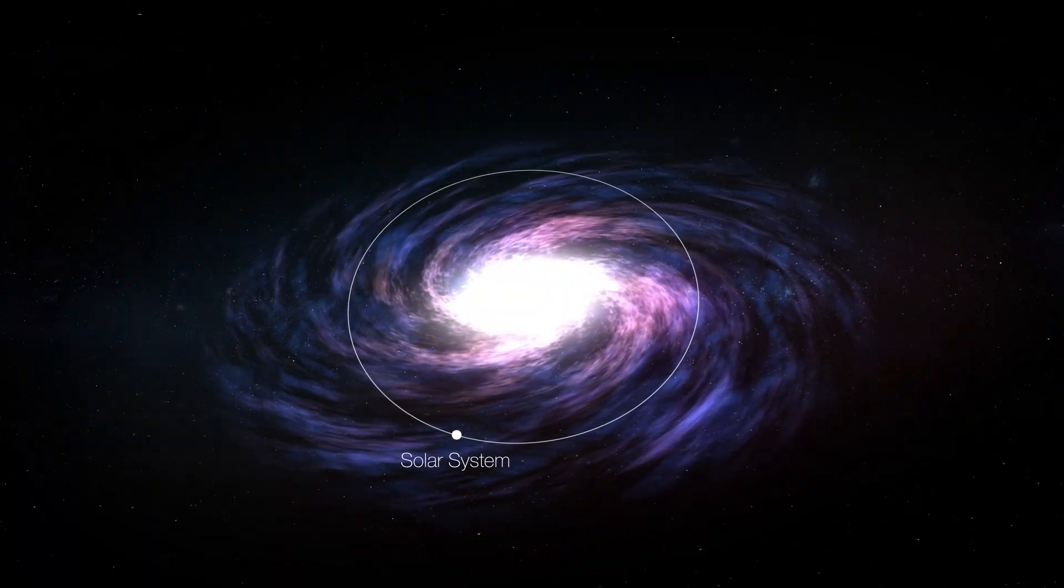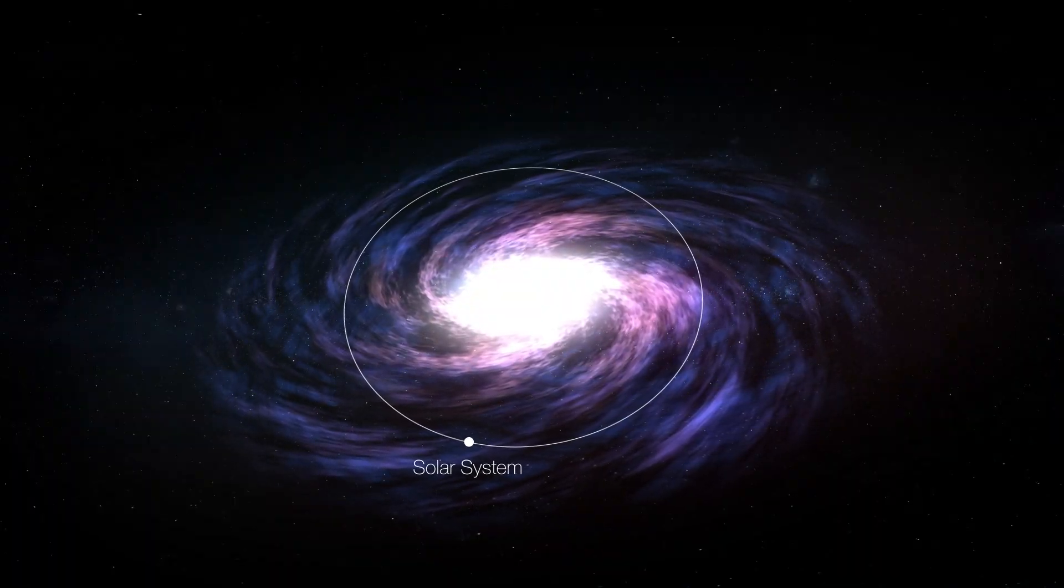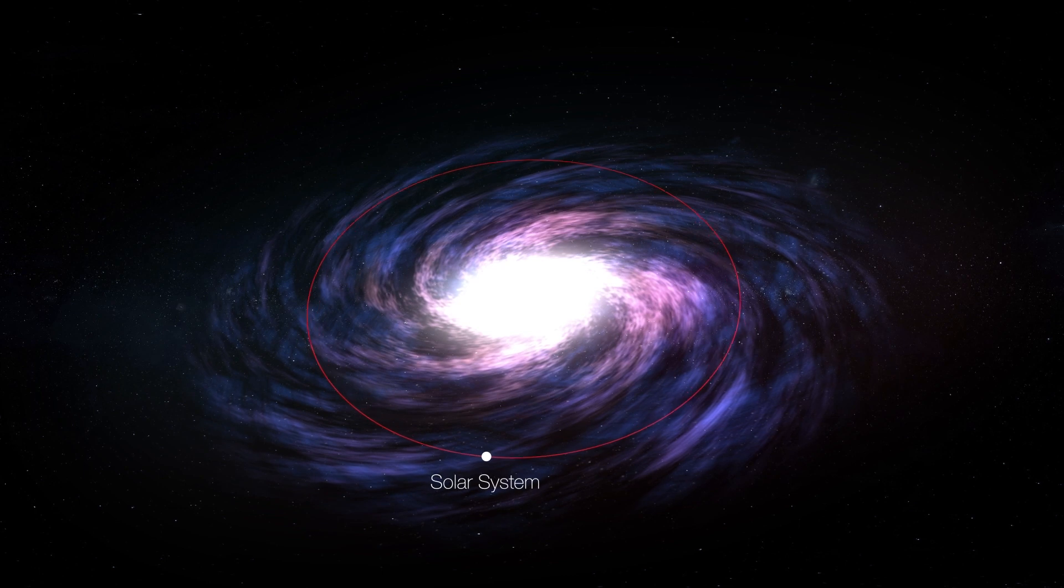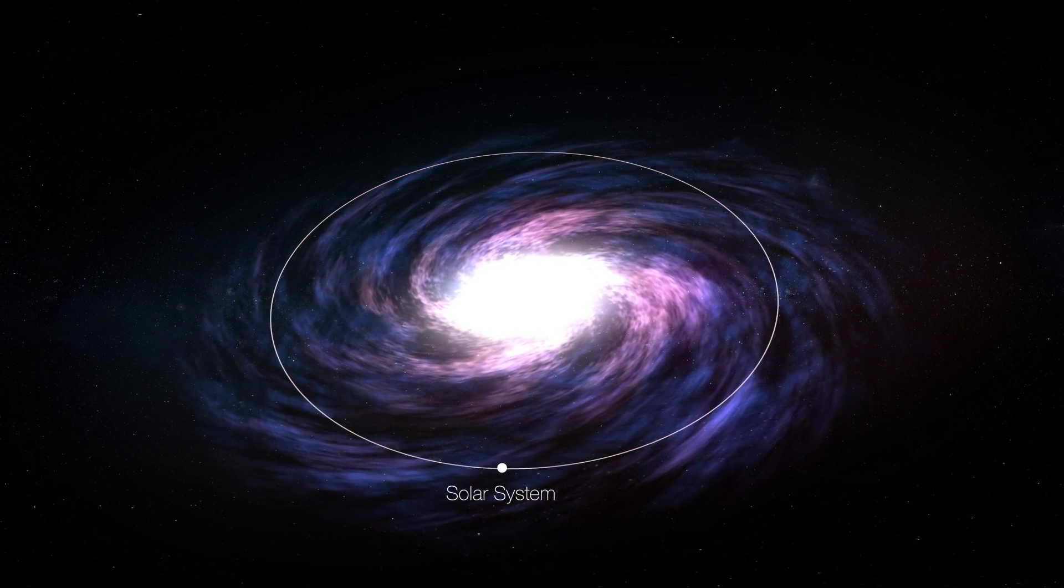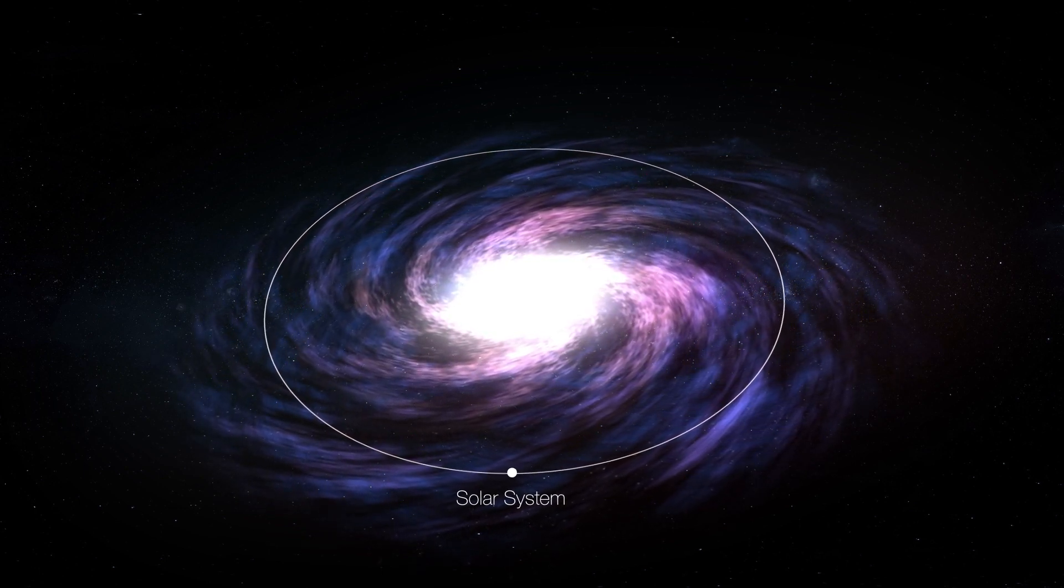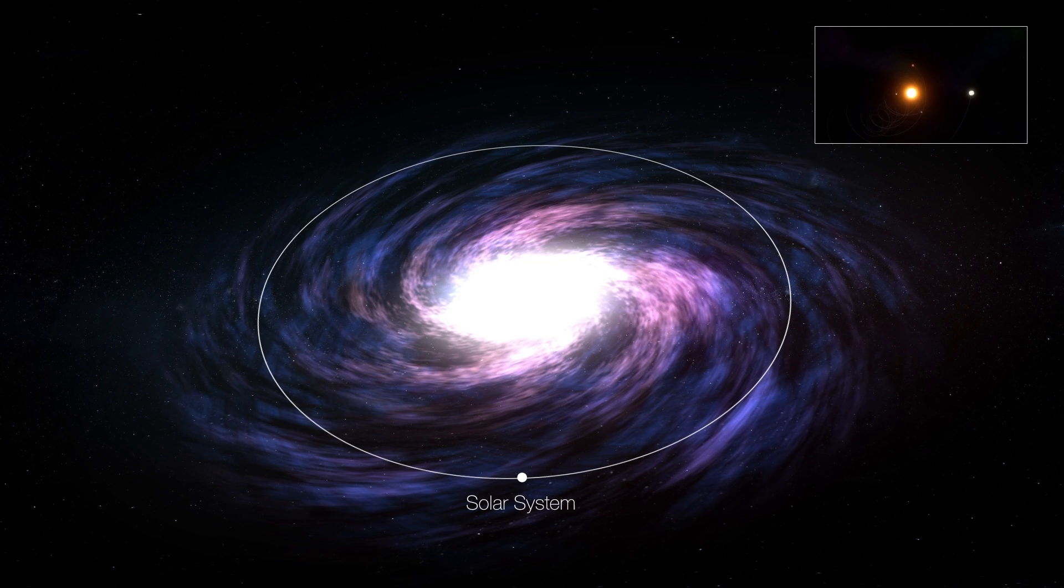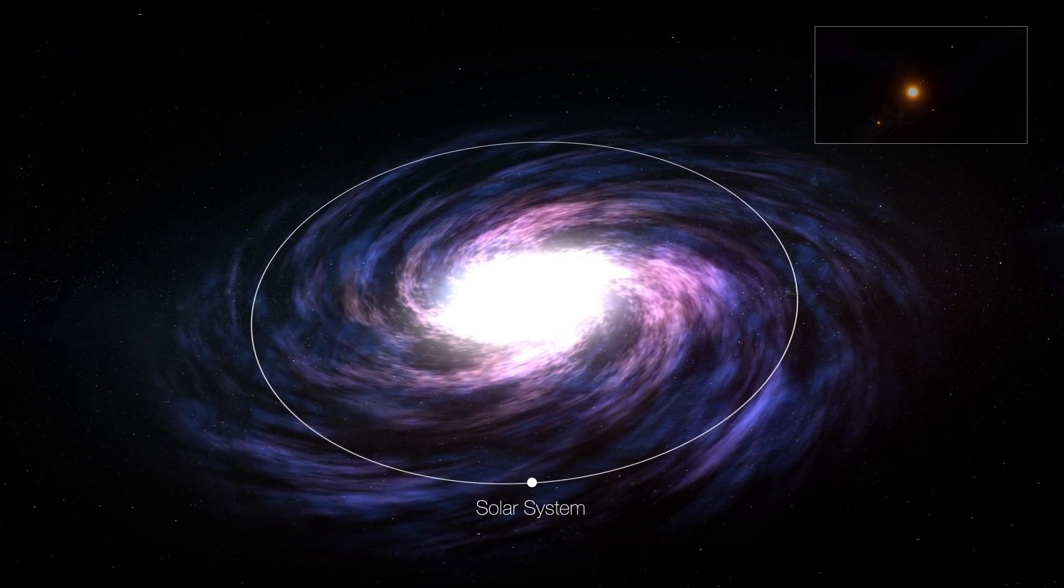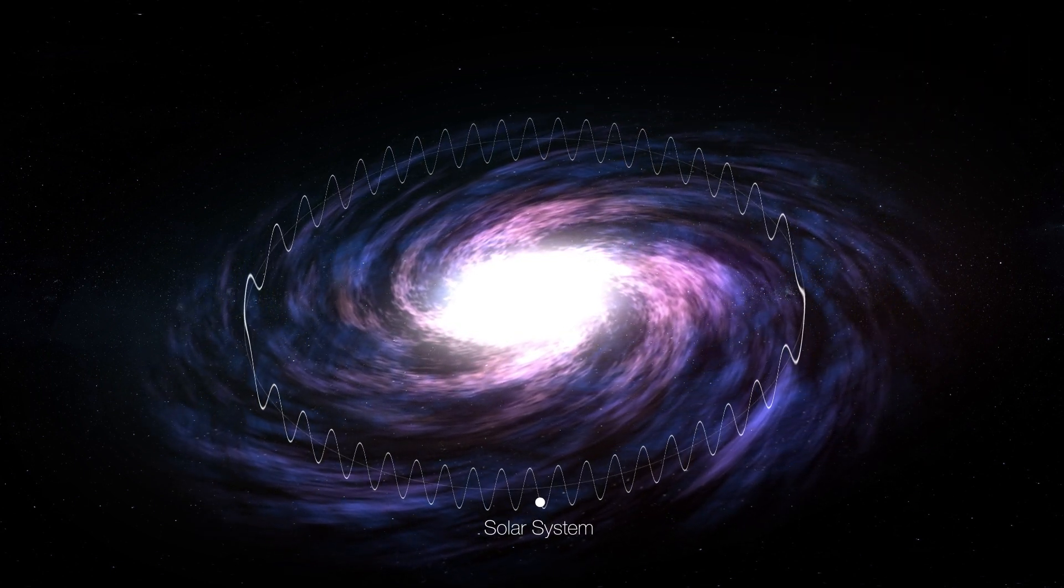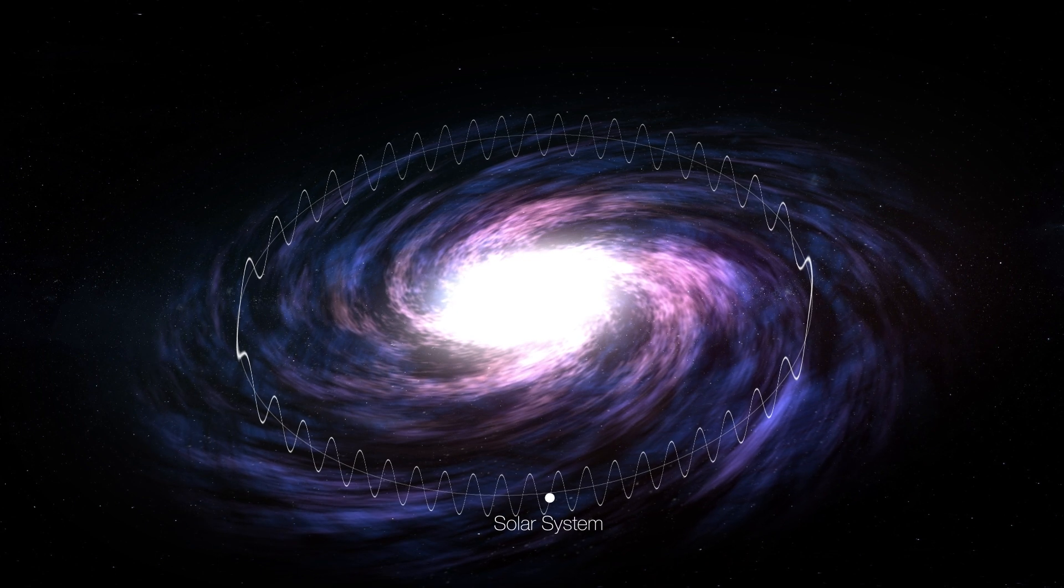As said before, the solar system does not just sit statically, nor does it orbit the galaxy in a flat, circular path, but rather it involves a complex spiral pattern as the galaxy itself rotates, and the solar system bobs up and down through the galactic plane.